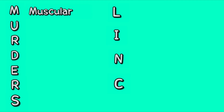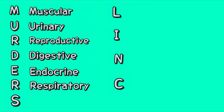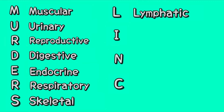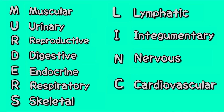Muscular, urinary, reproductive, digestive, endocrine, respiratory, and skeletal — that's 'Murda's'. Then Link: lymphatic, integumentary, nervous, and cardiovascular.